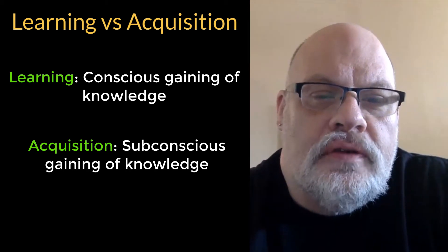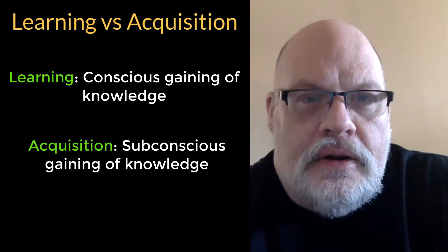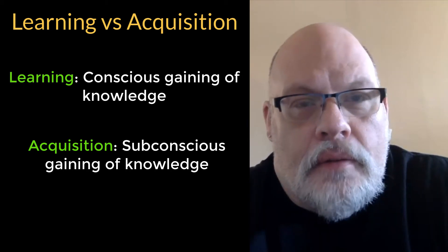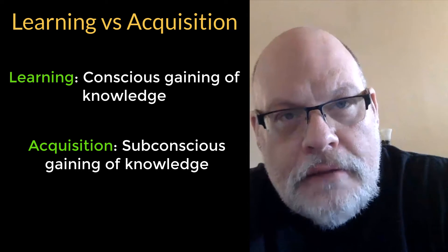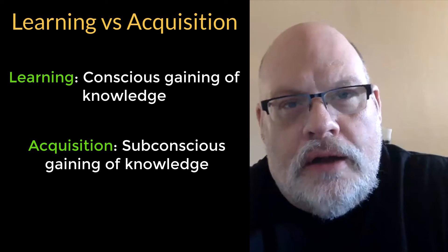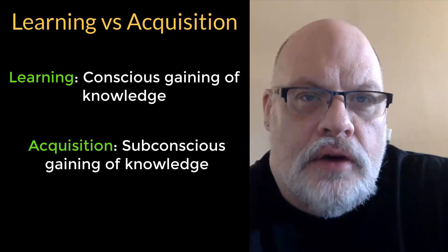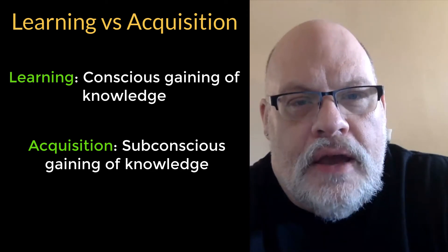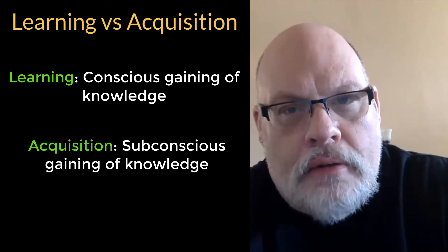It seems like small children acquire languages rather than learn them. They do it effortlessly; they don't actually think about what they're doing. Adults, by contrast, who try to learn a language in a classroom often don't do so successfully — they are rarely fluent — whereas adults who try to acquire a language by living with people and speaking it daily are much more successful. So we have this distinction between learning and acquiring, and we're mainly going to be talking about acquiring languages here.